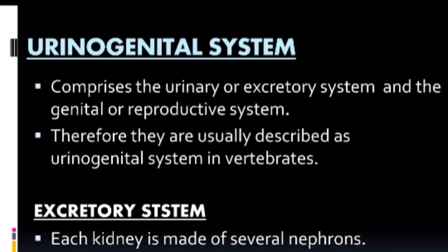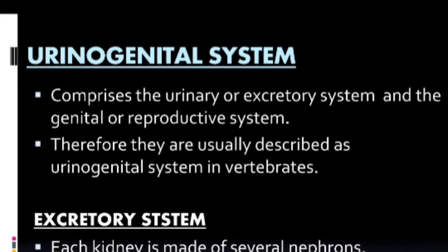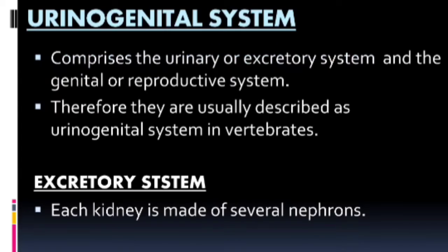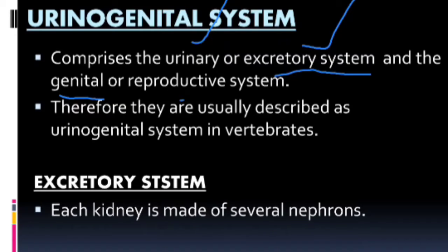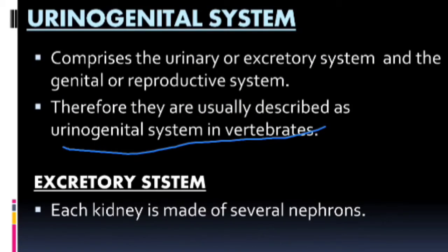The urino-genital system comprises both the urinary or excretory system and the genital or reproductive system. Both systems are joined together. The urinary system is otherwise called the excretory system, and the genital system means the reproductive system. Therefore, they are usually described together as the urino-genital system in vertebrates.